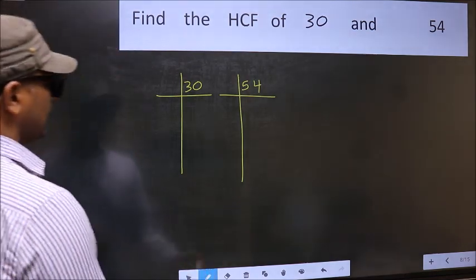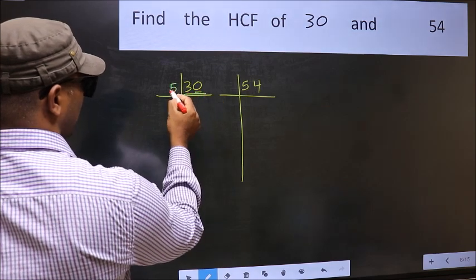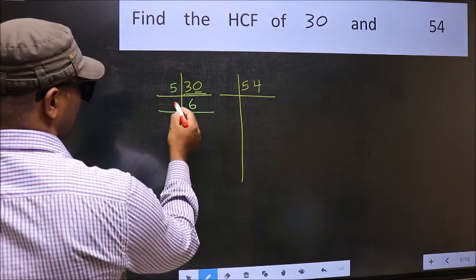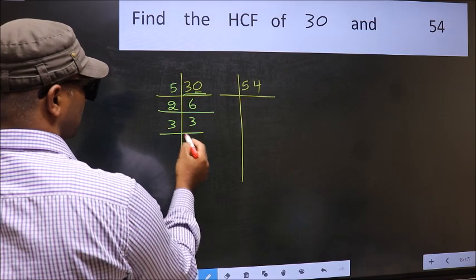Next, in this number, last digit 0 so take 5. When do we get 30 in 5 table? 5, 6, 30. Now 6 is 2, 3, 6. 3 is a prime number so 3, 1 is 3.